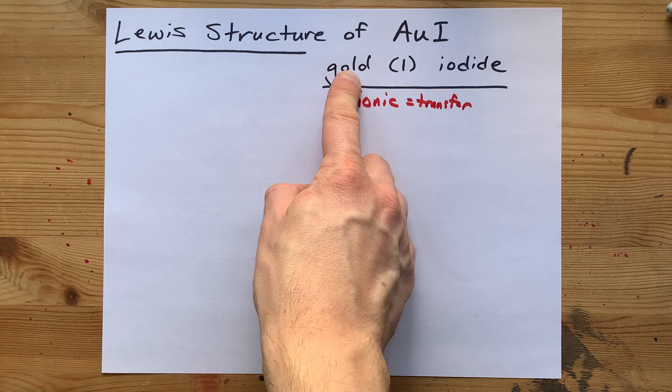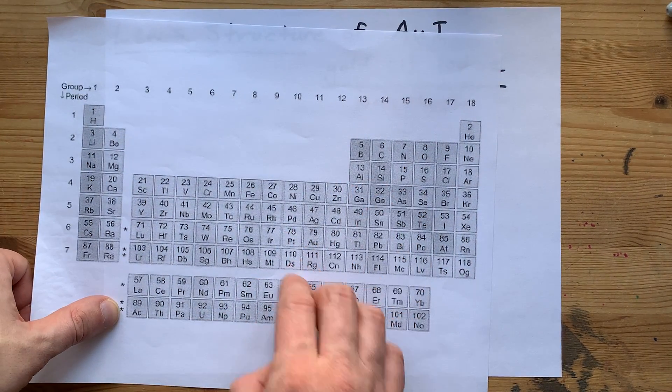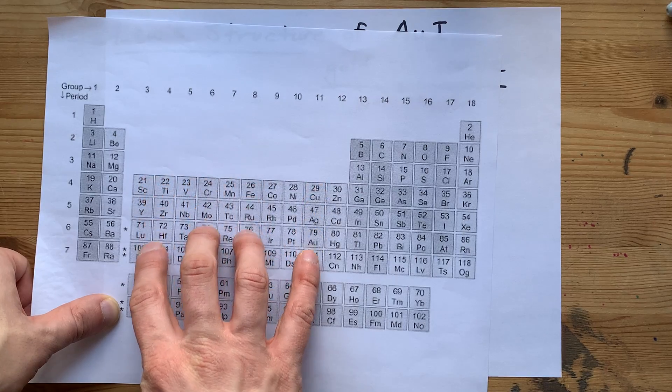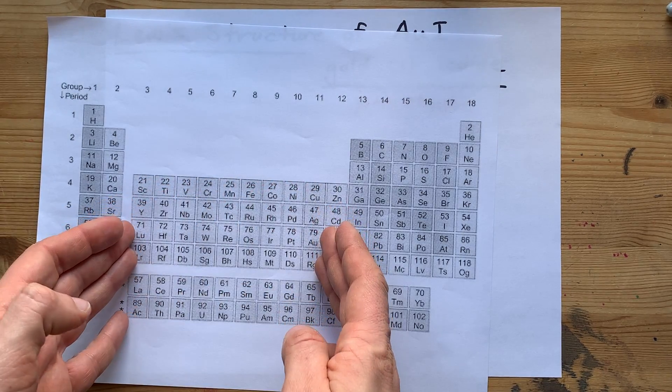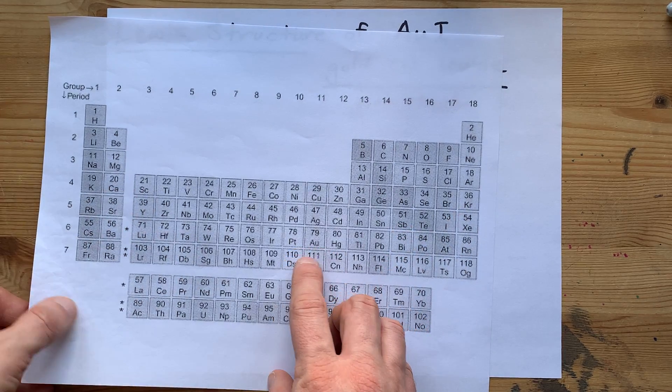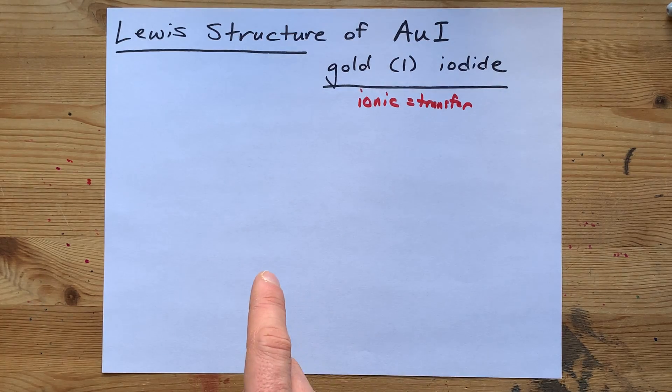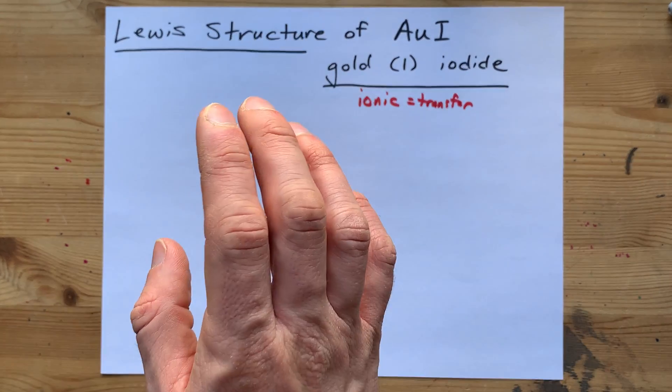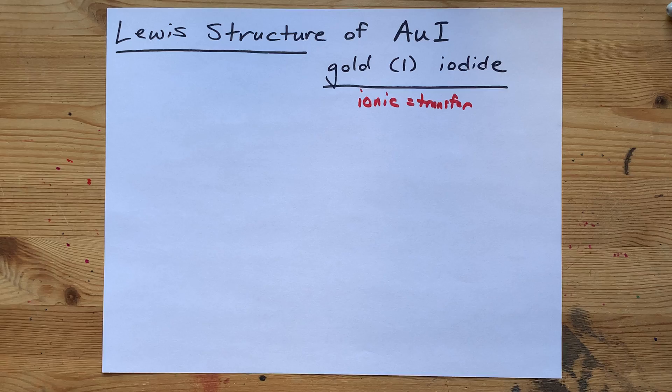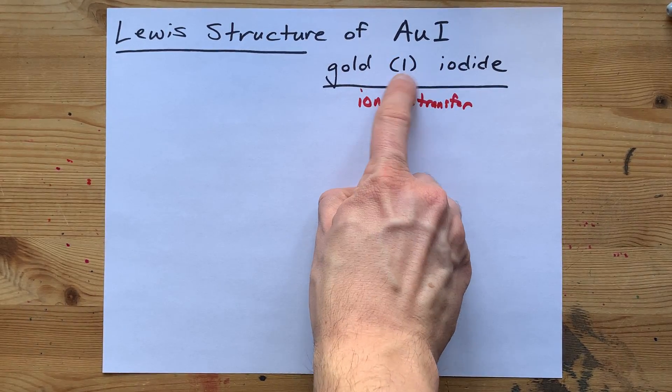How many valence electrons should we draw gold with? Well, that's a complicated question. Here in the transition metal block, these atoms can have more than one possible charge. You need to figure out what the charge that gold has in this compound is, and draw that many electrons on it. Hopefully it's obvious that the charge on this gold is 1.